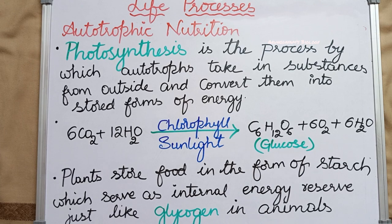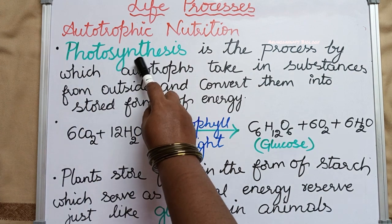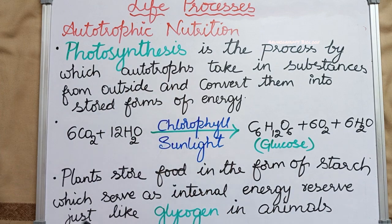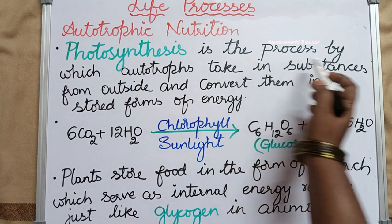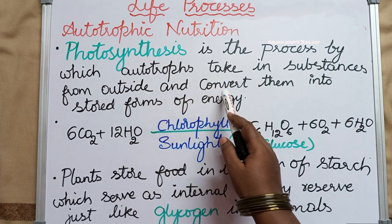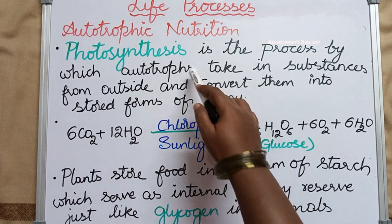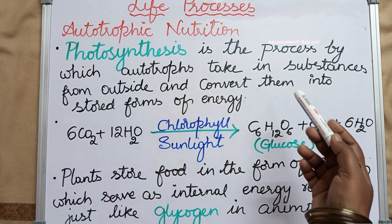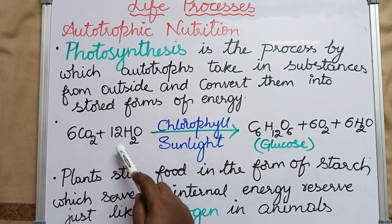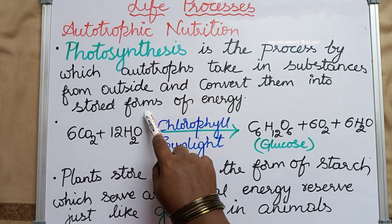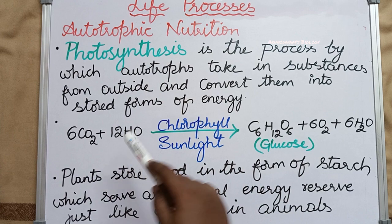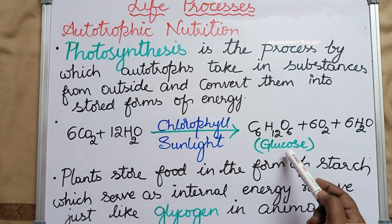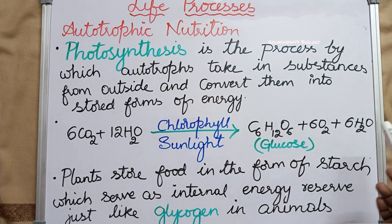Let us learn about autotrophic nutrition. Some organisms fulfill their energy requirements by a process called photosynthesis. 'Photo' means light and 'synthesis' means preparation, so these organisms use sunlight for the preparation of food materials. Photosynthesis is a process by which autotrophs — green color plants and photosynthetic bacteria — take simple inorganic substances like carbon dioxide and water from outside and convert them into stored forms of energy, such as glucose and starch.